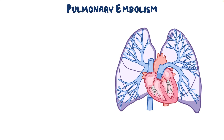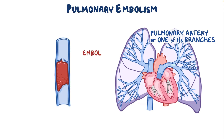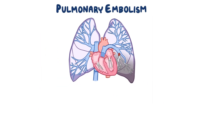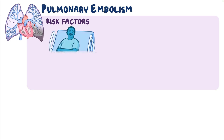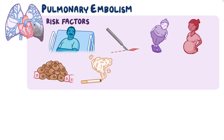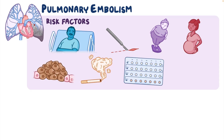Pulmonary embolism refers to a blockage of the pulmonary artery or its branches by an embolus, which is usually a blood clot originating from somewhere in the body, most commonly the lower extremities. Risk factors include prolonged immobilization, major surgery, obesity, pregnancy, malignancy, smoking, and use of oral contraceptives. Personal or family history of PE or DVT also increases the risk.